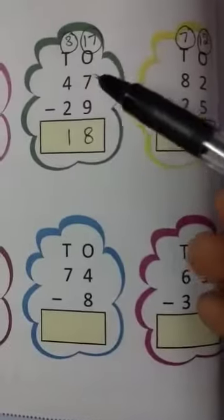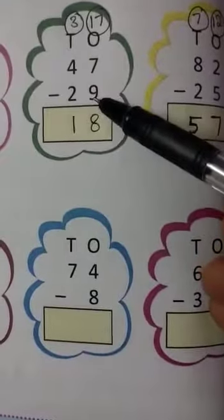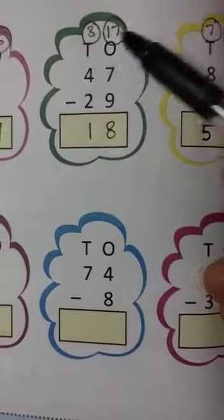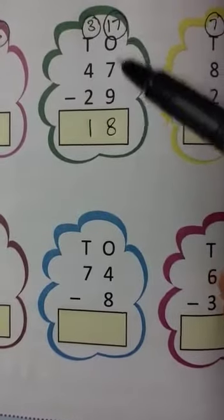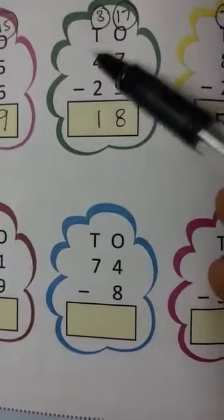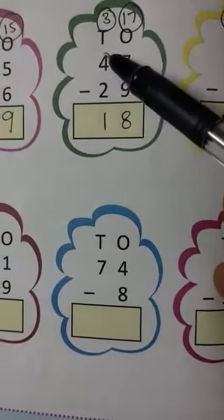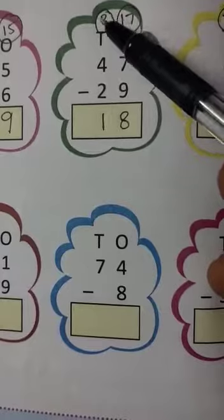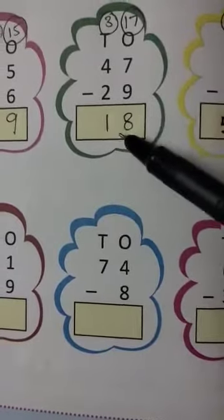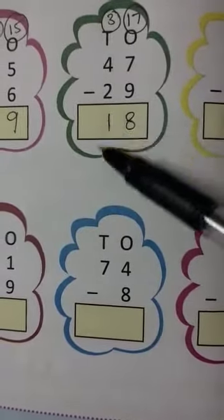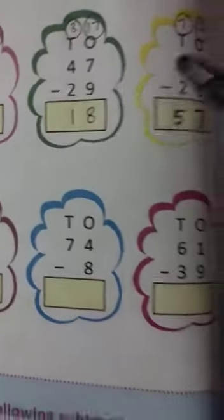Next problem. In the ones place, 9 minus 7 — can't subtract, so borrow. 17 minus 9 is 8. In the tens place, remaining 4 minus 1 borrowed gives 3; 3 minus 2 is 1. So the answer is 18.